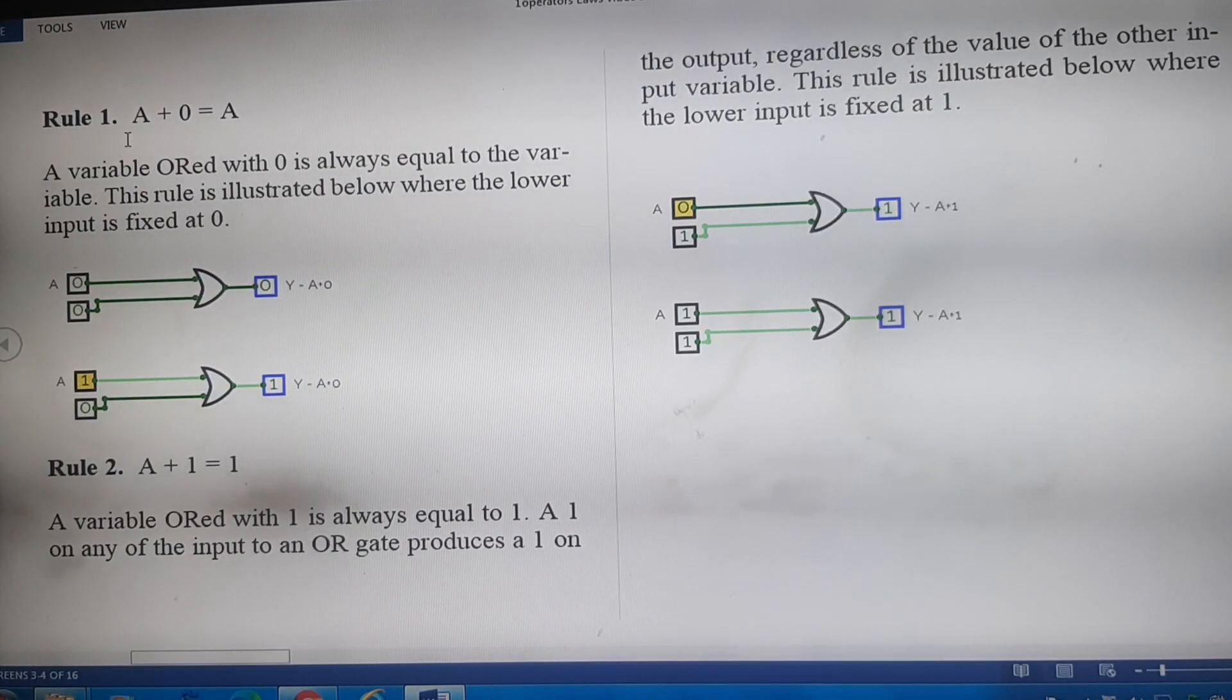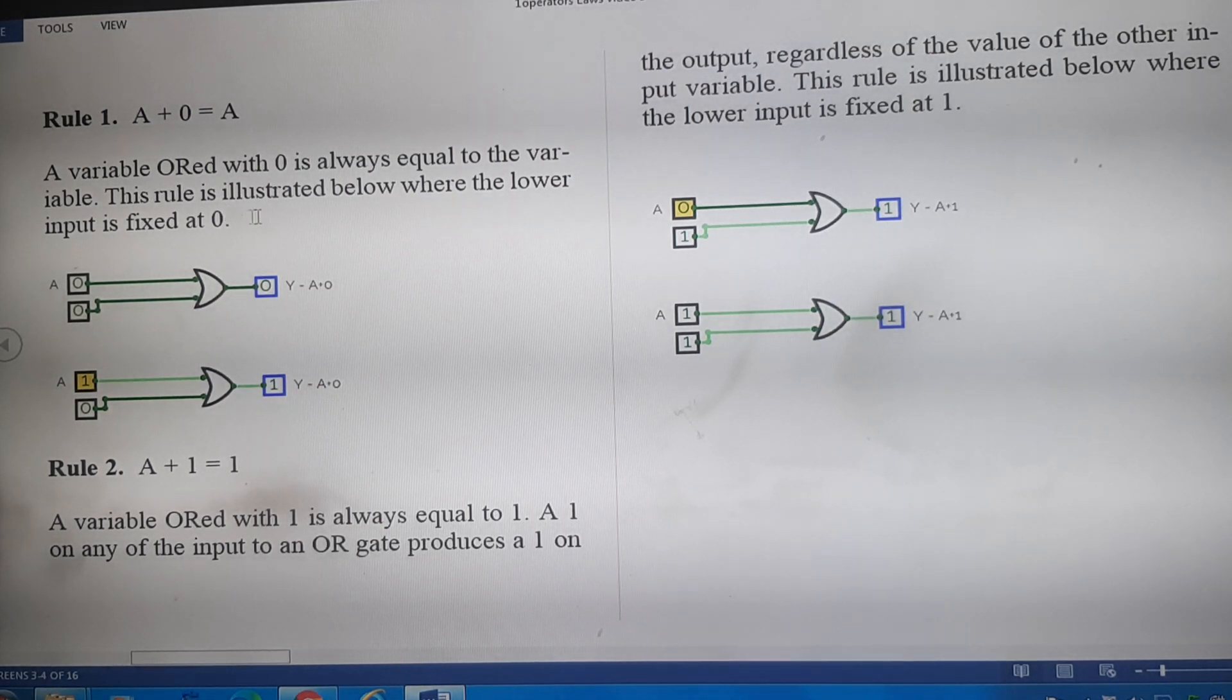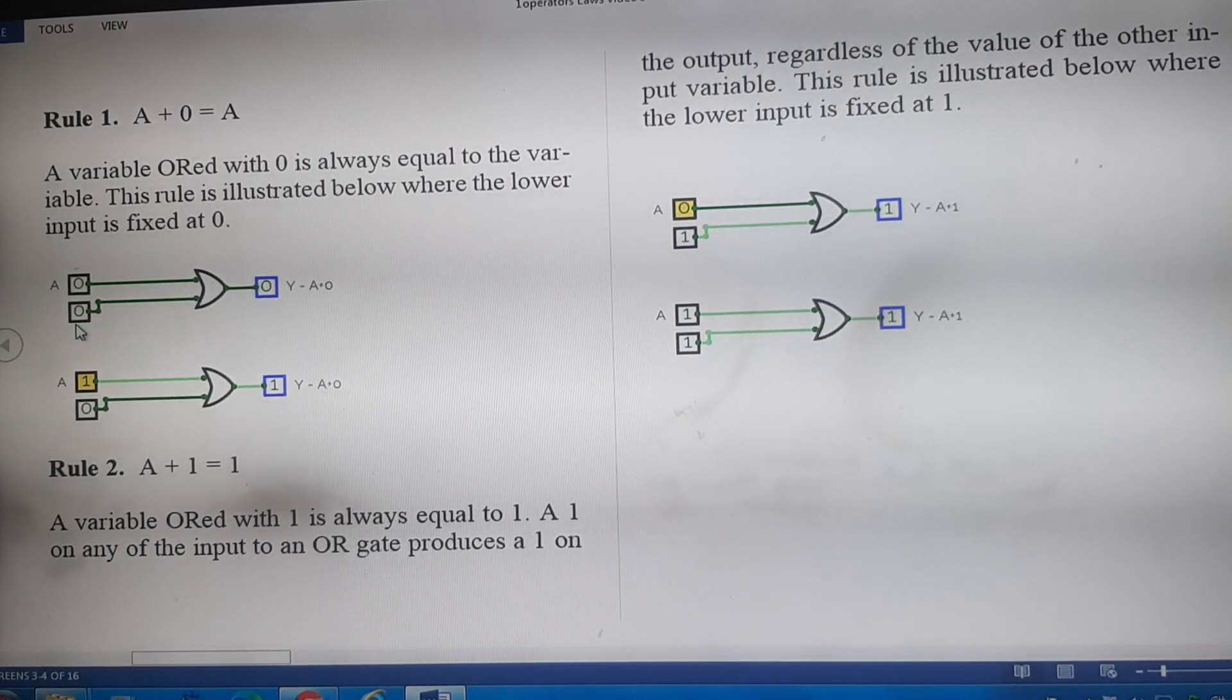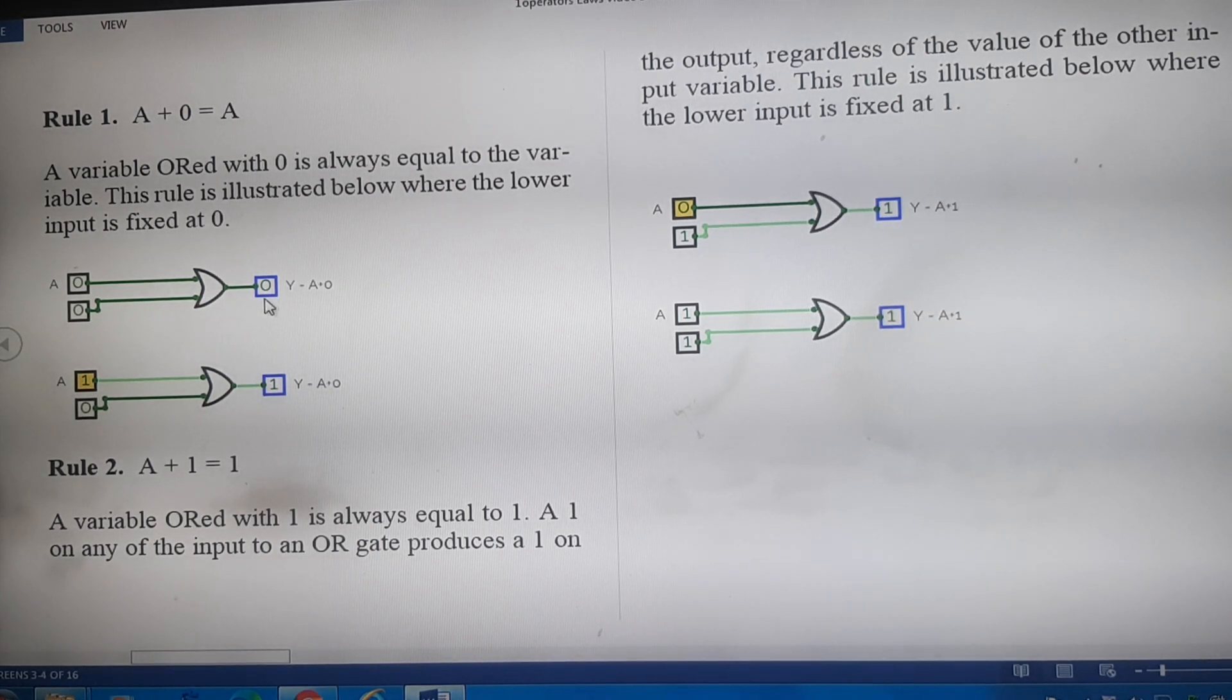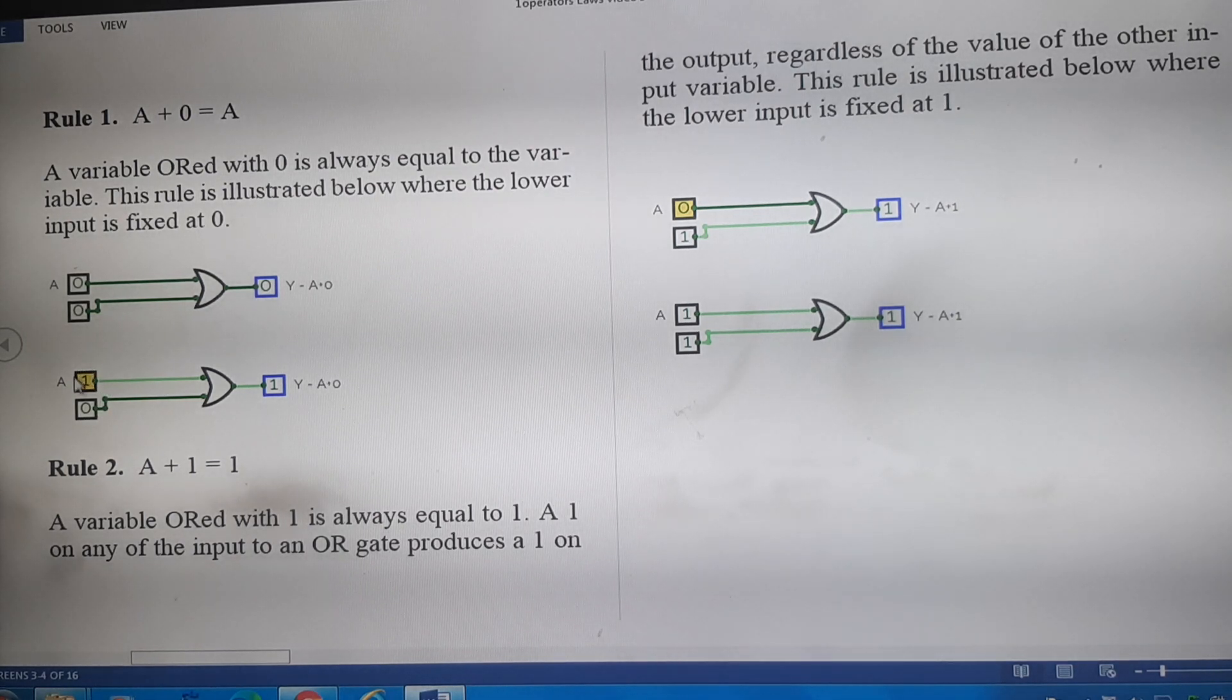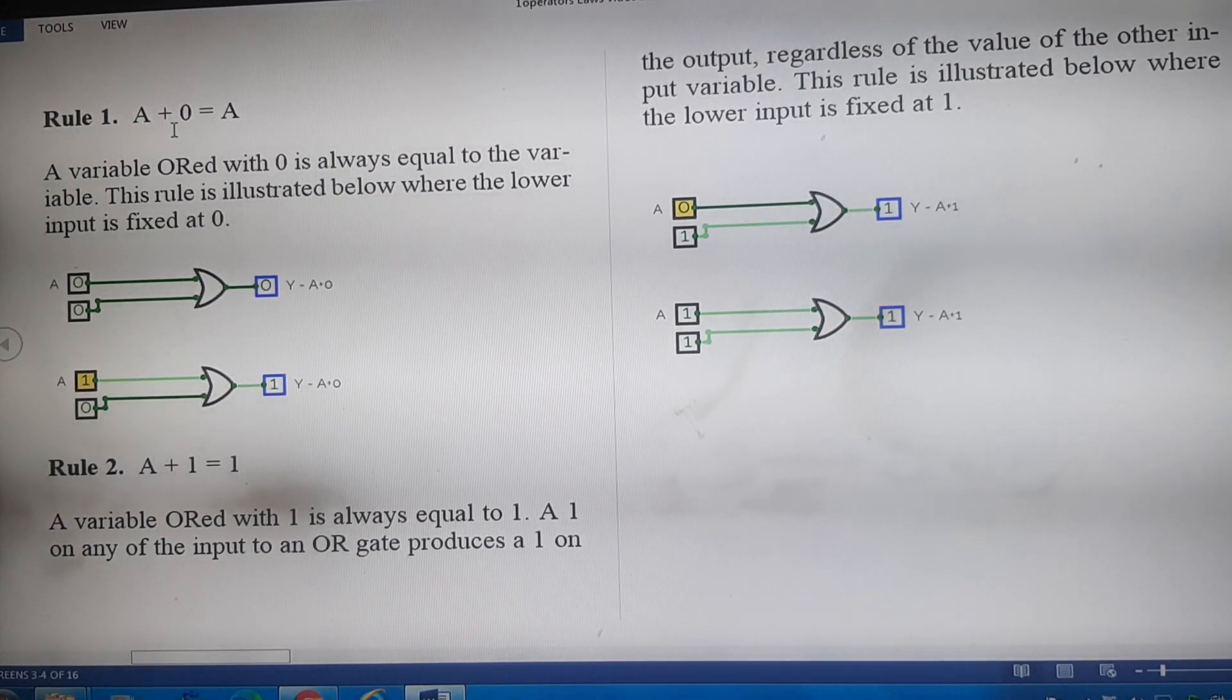Rule number 1: a variable ORed with 0 is always equal to the variable. This rule is illustrated below where the lower input is fixed at 0. Assume first that A is equal to 0. Now 0 + 0 as per the truth table of OR gate gives the output 0 which is equal to A. In the second case, assume its value to be 1. So 1 + 0 gives the output equal to 1 which is equal to A. So we can say that A + 0 = A.